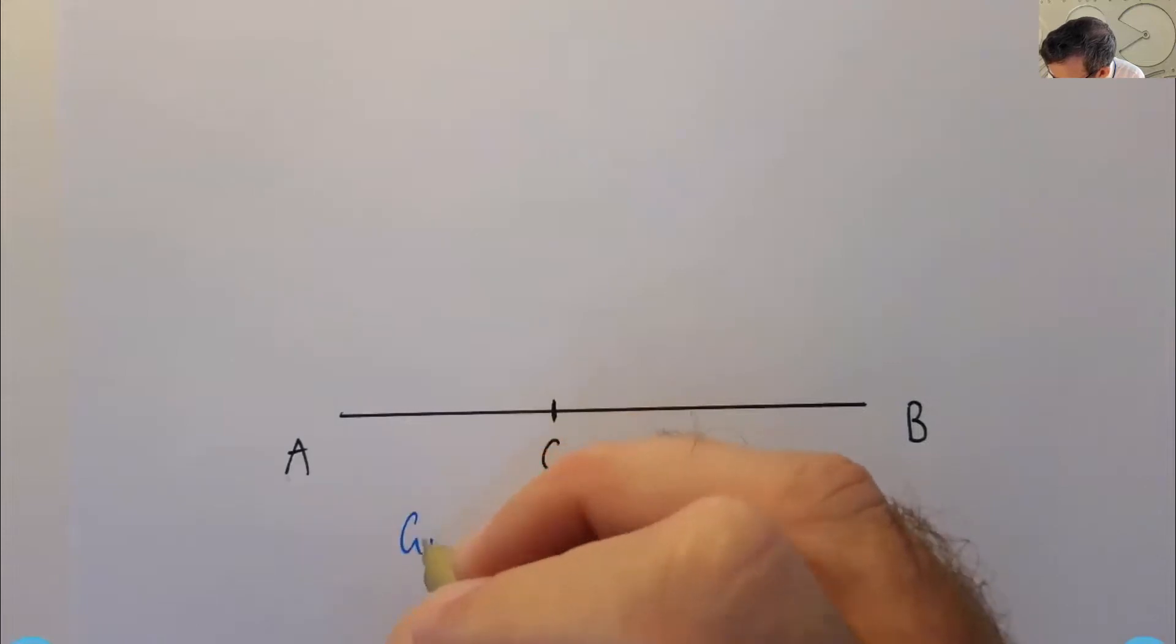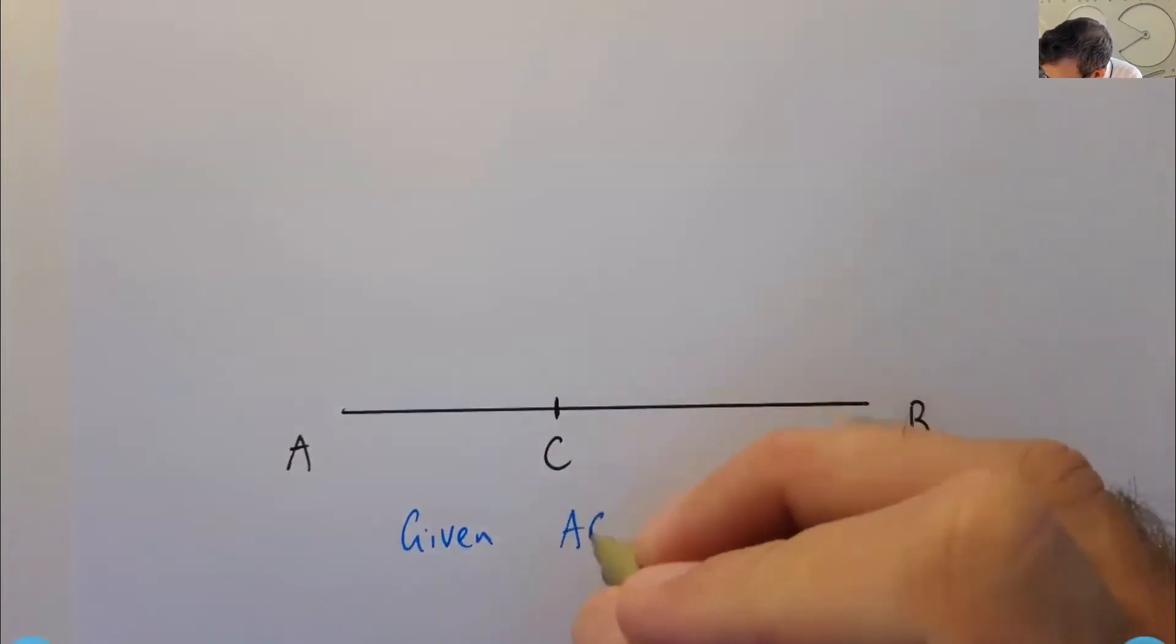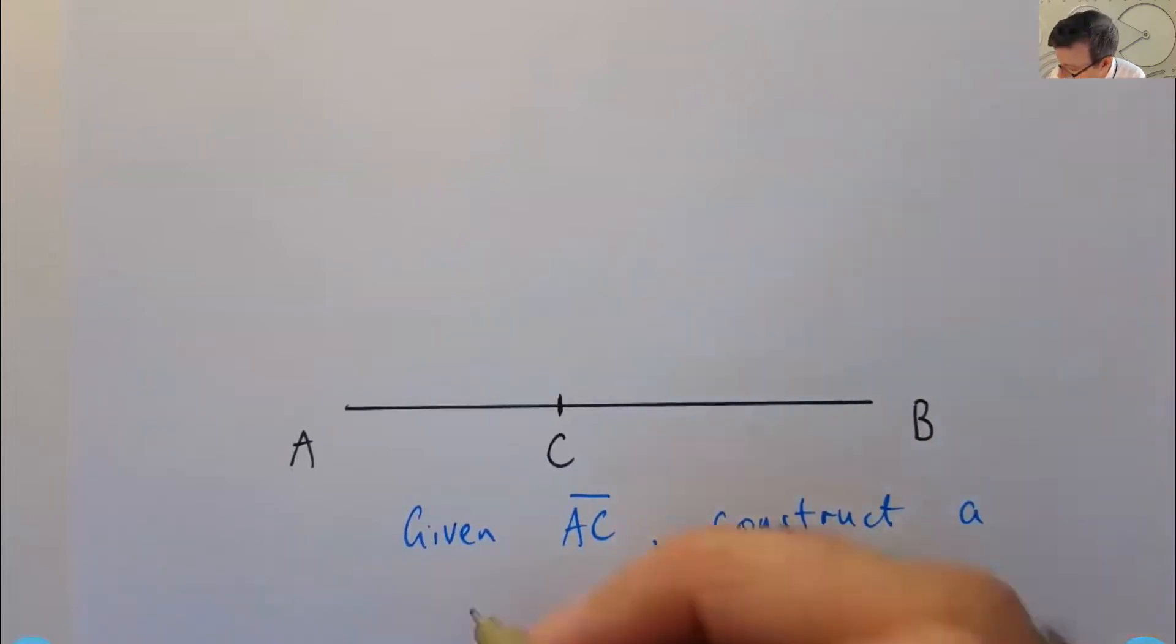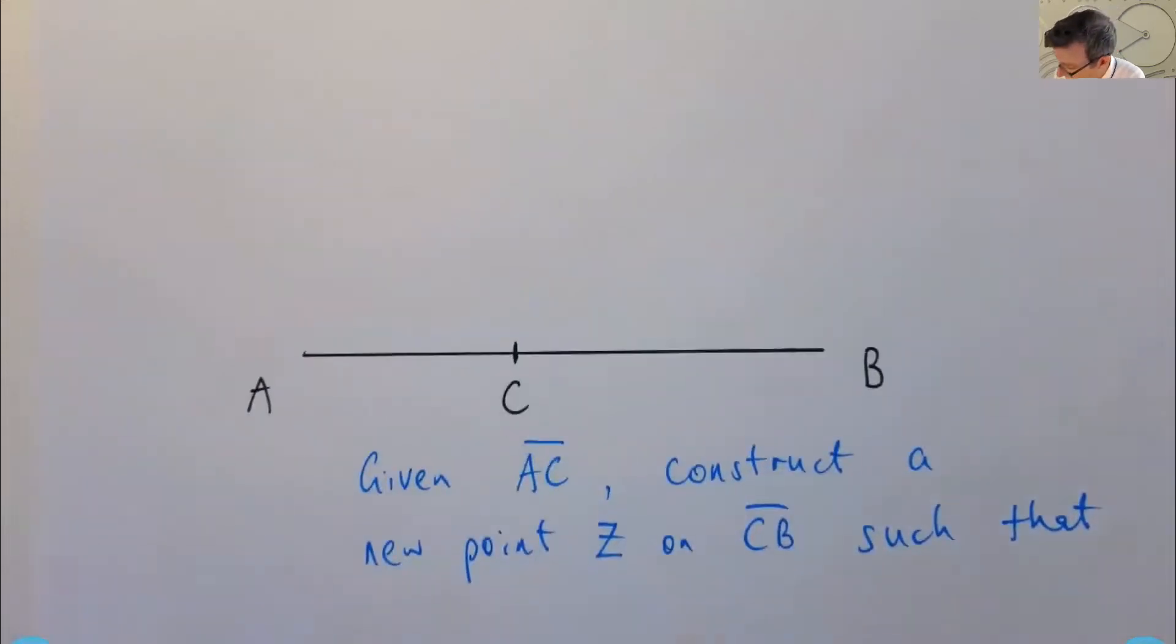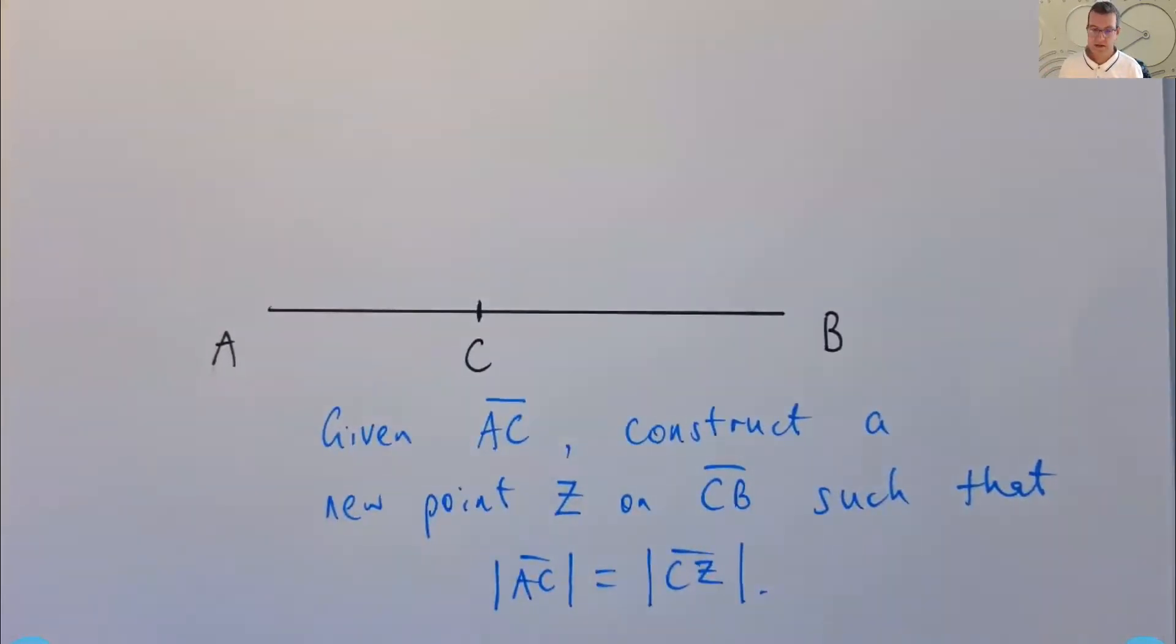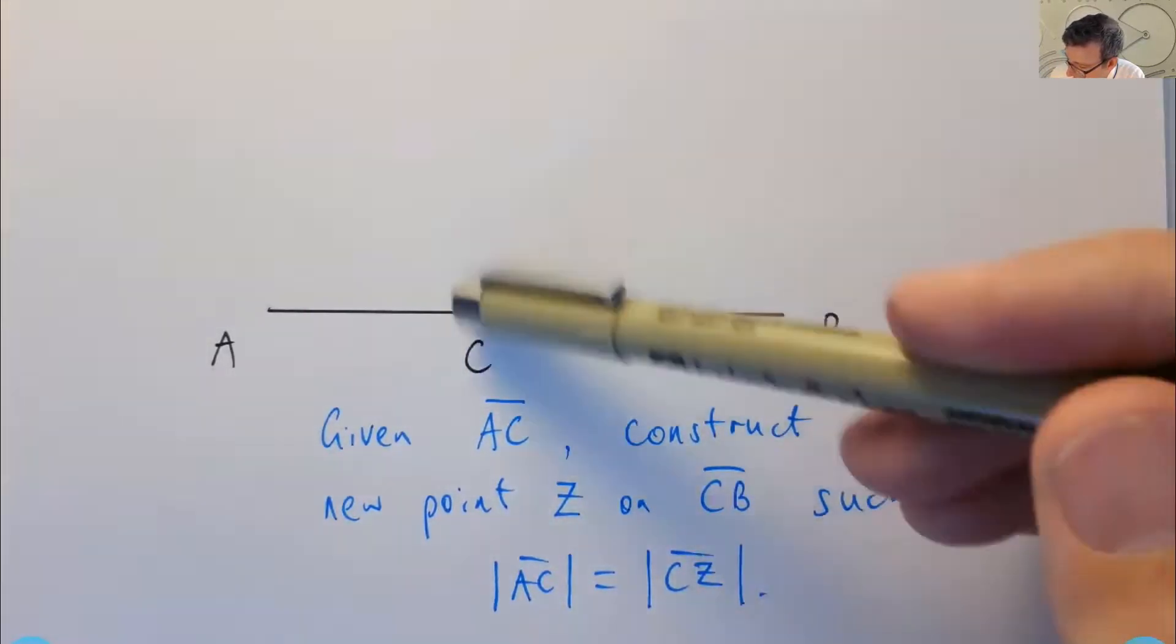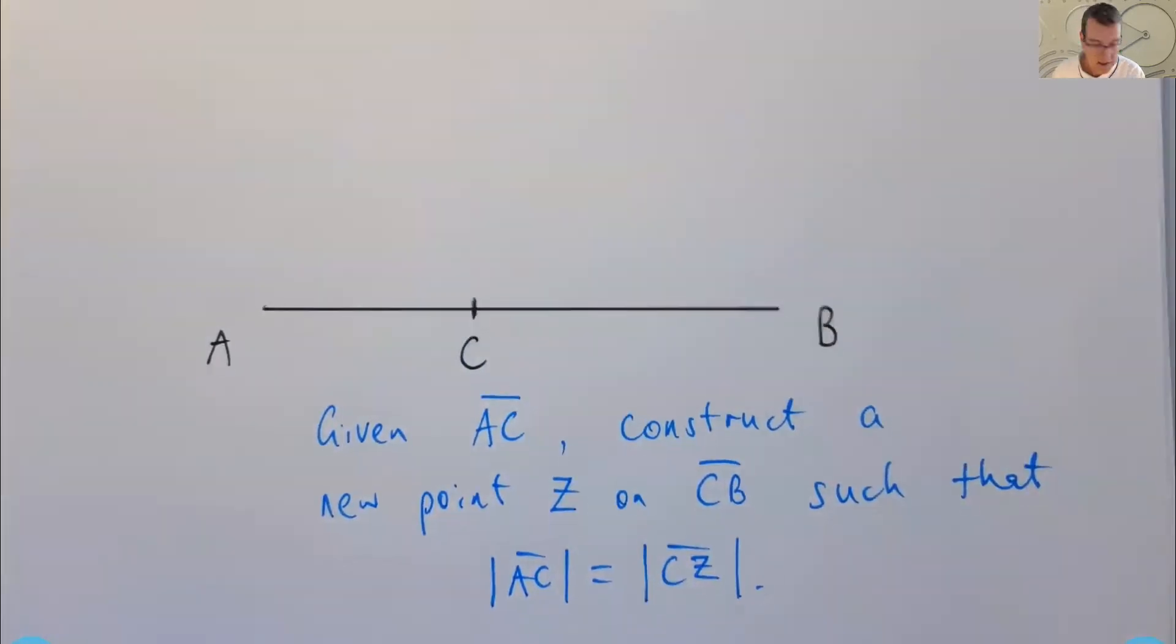So given AC, construct a new point, let's say, I'll call it just Z, such that the length of AC equals the length of CZ. That's kind of what we're doing, if I was to summarize it. So the first thing I'm going to do is drop a perpendicular ray or line segment to the point C. So how do we do that?